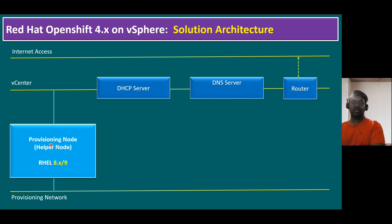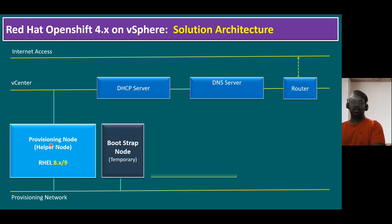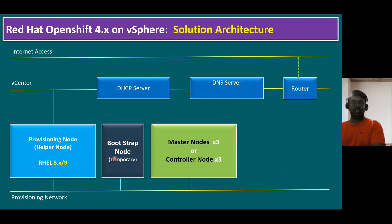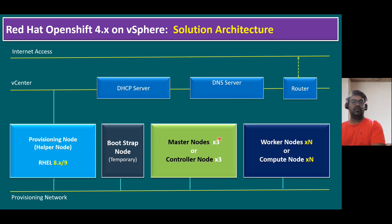When we initiate the OpenShift cluster installation using the provisioning node, it first prepares a bootstrap node. This bootstrap node is temporary — only used until the cluster setup is complete, after which it is automatically removed. The bootstrap node prepares a template using Red Hat Core OS (RHCOS), and using that template it deploys the master nodes, also called controller nodes. Minimally, three master nodes are deployed — that is the recommended configuration.